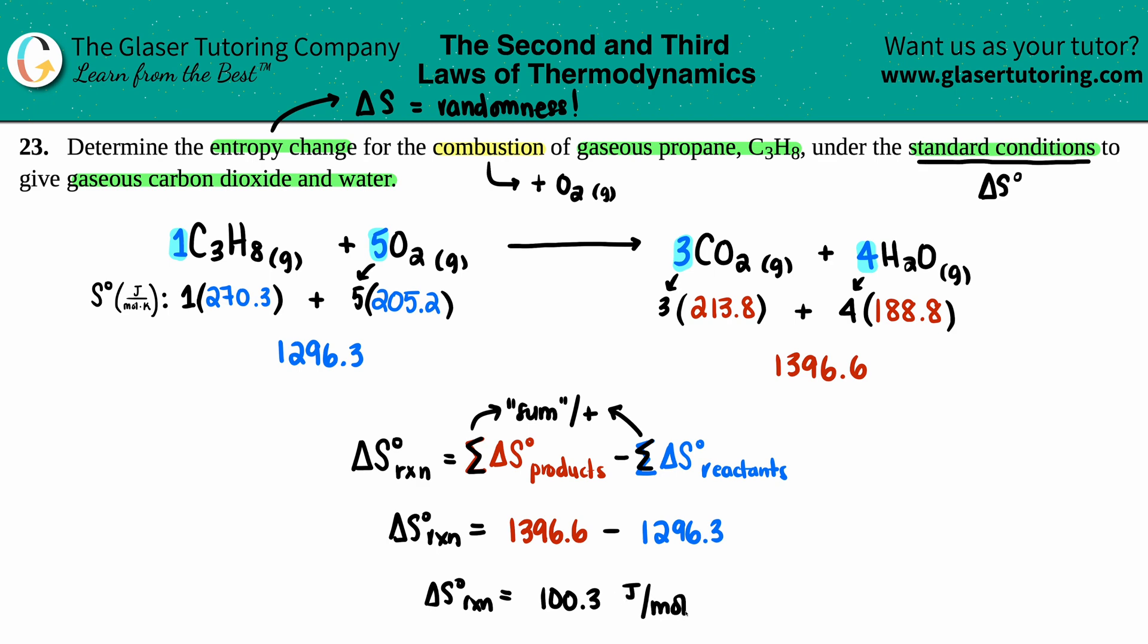And then can we predict this sign? I said in the beginning, can we predict the sign by giving the balanced equation? This was a positive, which means that our products are more entropic, more random than our reactants.